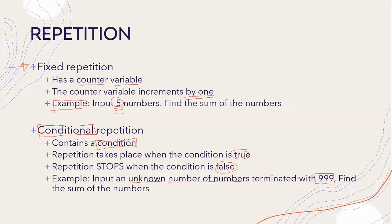When the number that is input is 999 — and let's assume we want to find the sum of the numbers — the user will give us a list of numbers, but we don't know at what point the repetition will stop. It's only when the user enters the number 999 that the repetition should stop, and then you need to display what the sum of the numbers is. This is the basic difference between fixed repetition, where we know how many times the loop will execute, and conditional repetition, where the loop depends on when a condition is satisfied.